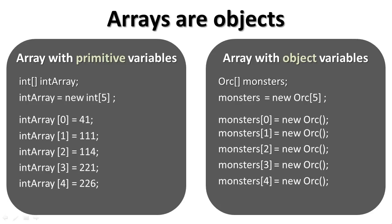I almost want you to think of arrays as a line of boxes on your shelf. Each one of those boxes holds something. For instance, box 1 would hold this primitive value of 41 and this one would hold 111 and so on. And the same over here, this box would hold this orc and box 2 would hold this orc.